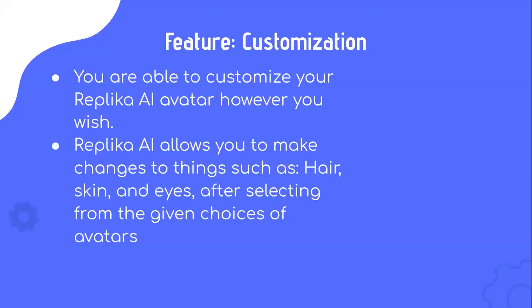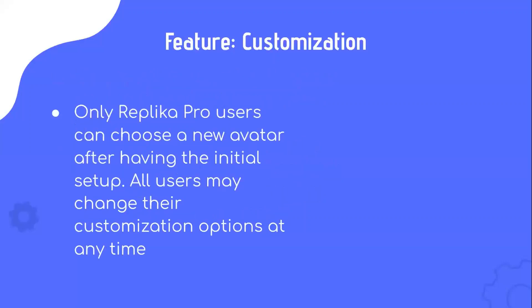Customization: You are able to customize your Replika AI avatar however you wish. Replika AI allows you to make changes to things such as hair, skin, and eyes after selecting from the given choices of avatars. Only Replika Pro users can choose a new avatar after the initial setup, though all users may change their customization options at any given time.